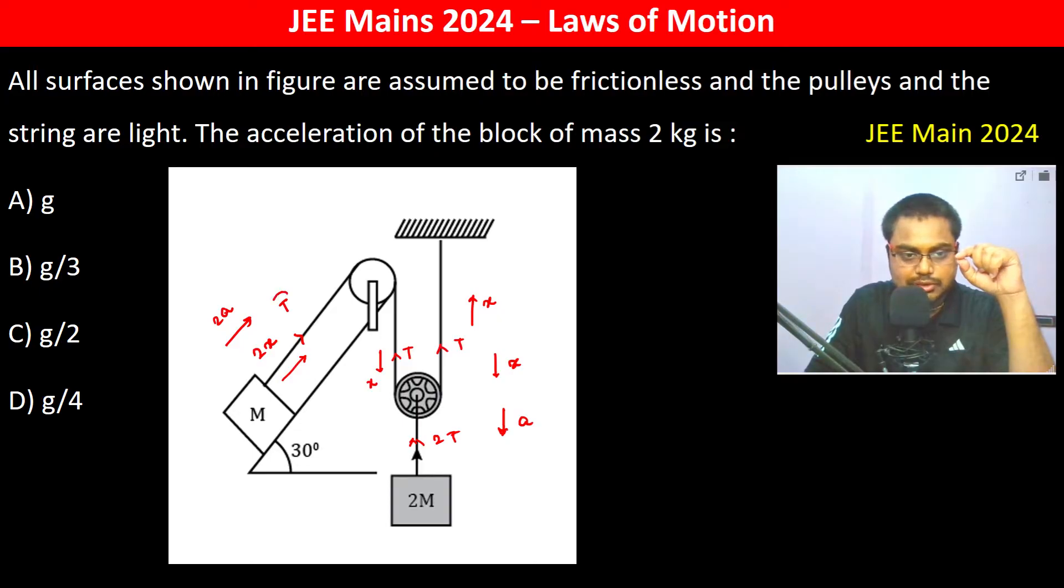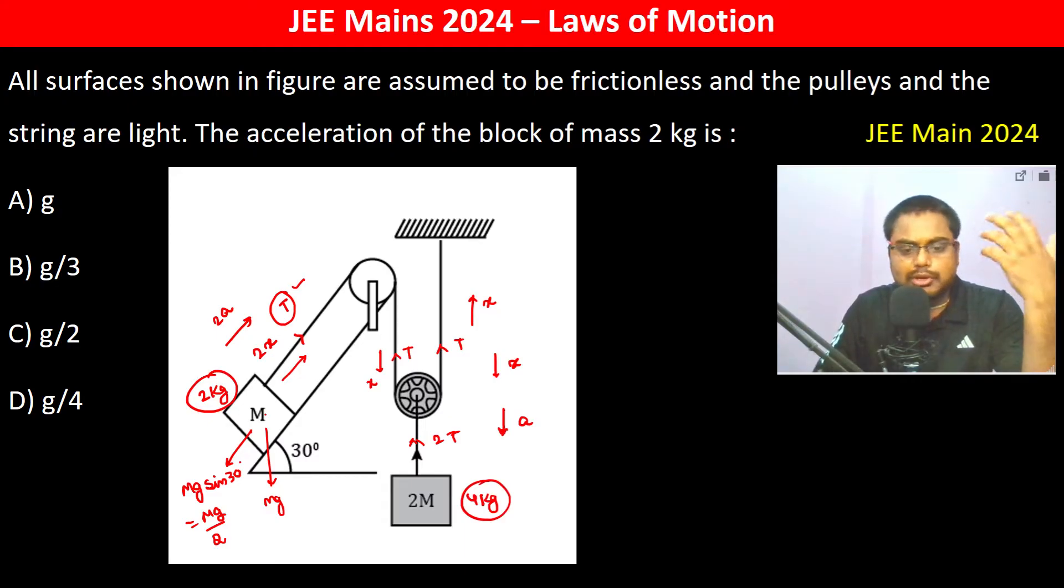Now FBD of this: tension T is acting and this is mg. So mg's component in this direction is going to be mg sine 30 degree which is mg by 2. Now what is m? m is 2 kg and here 2m is going to be 4 kg.